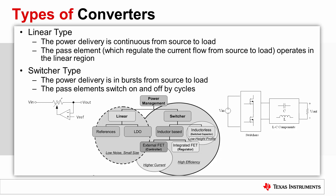A buck converter can be thought of as a PWM pulse alternating between ground and the input voltage that is ultimately averaged by an averaging filter. The source is not always connected to the load. In contrast, the pass element switches the source onto and off of the load at a periodic rate, typically in the hundreds of thousands of times per second.